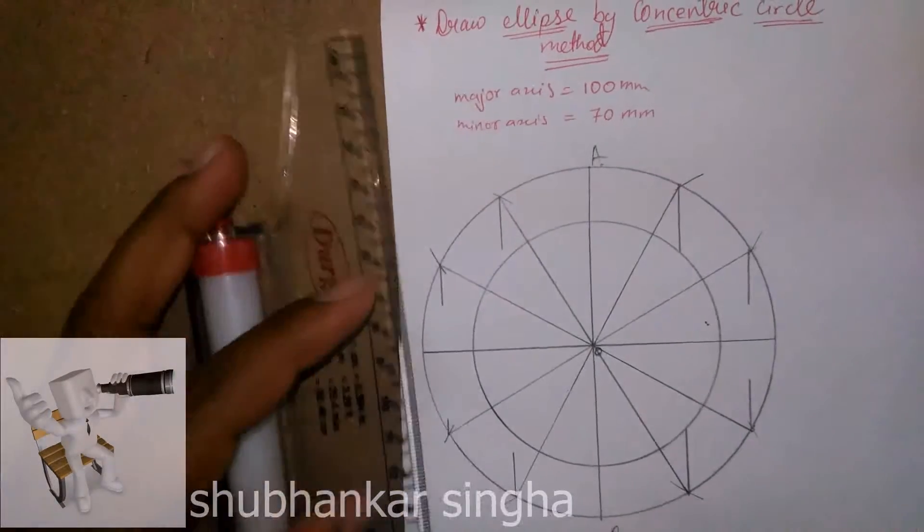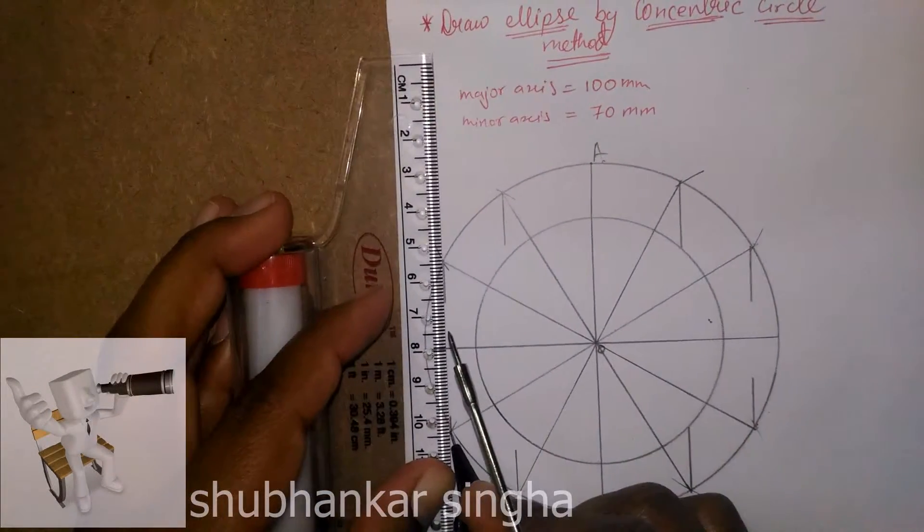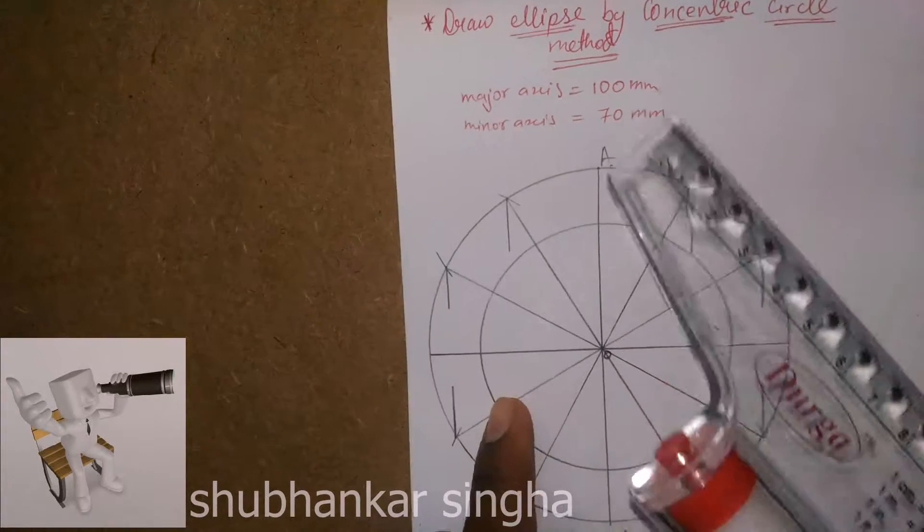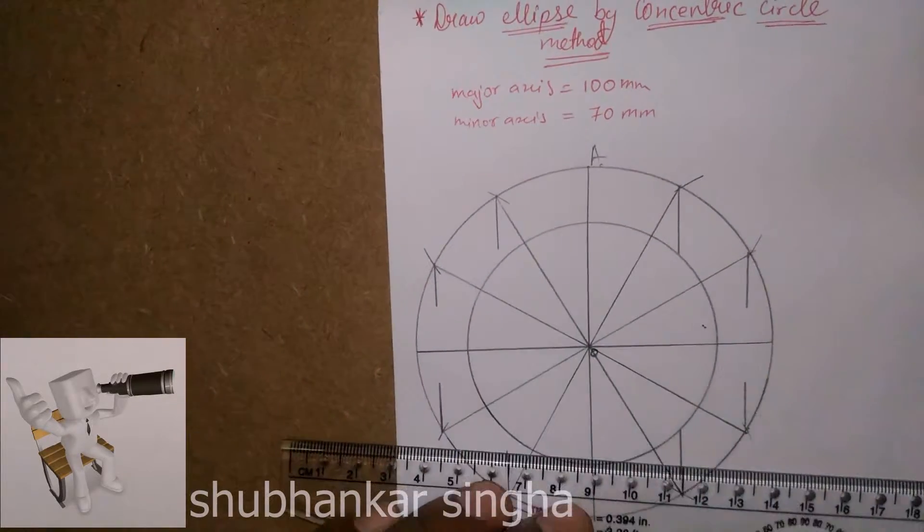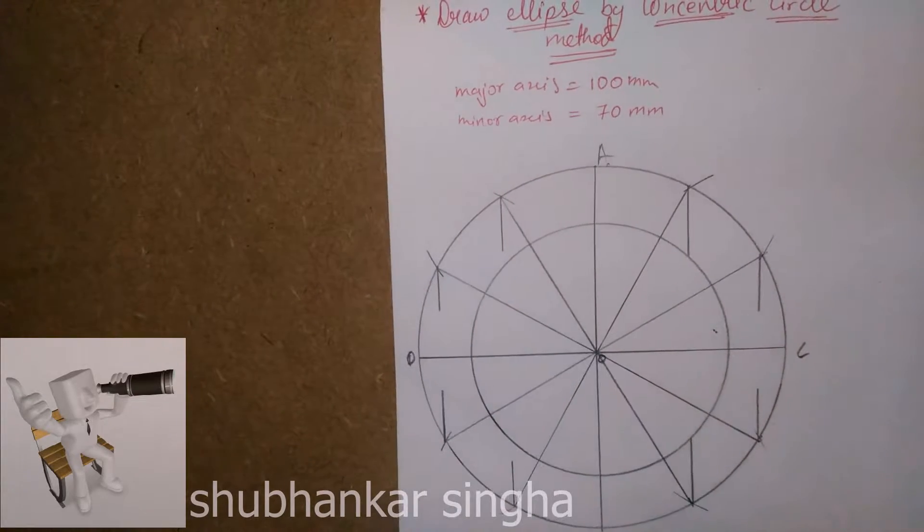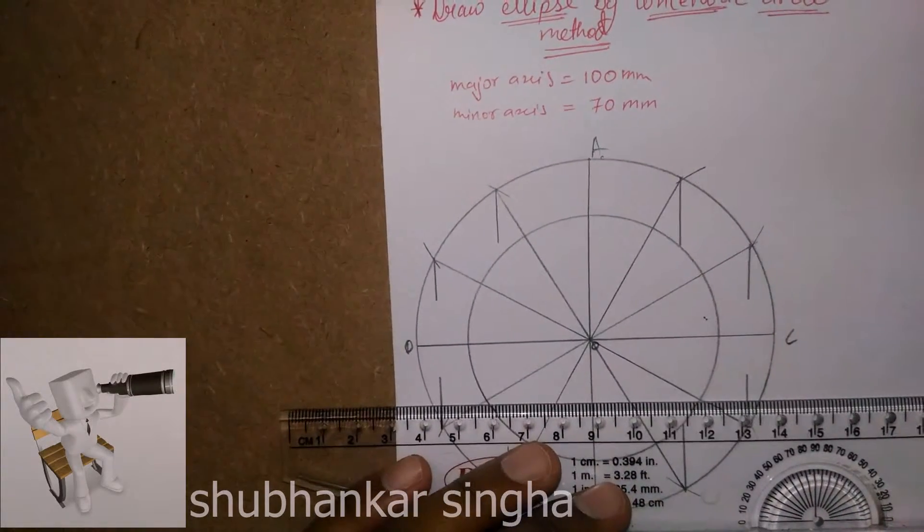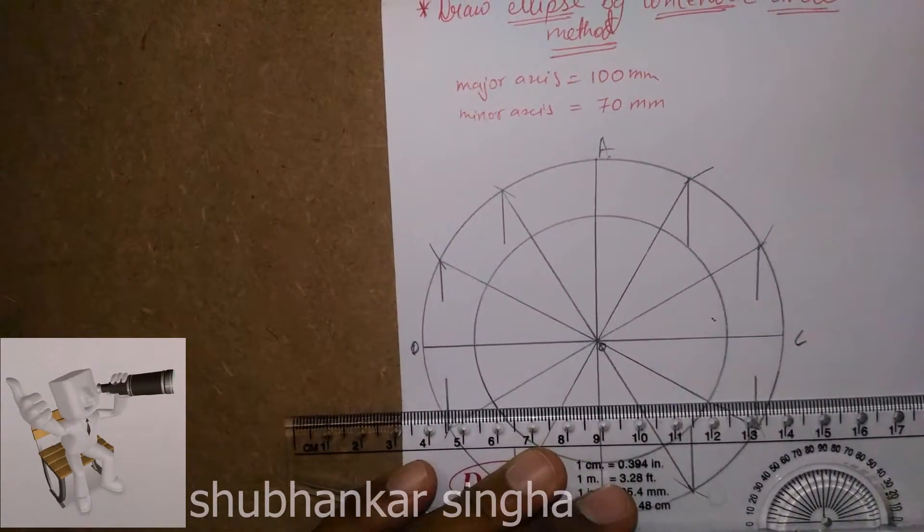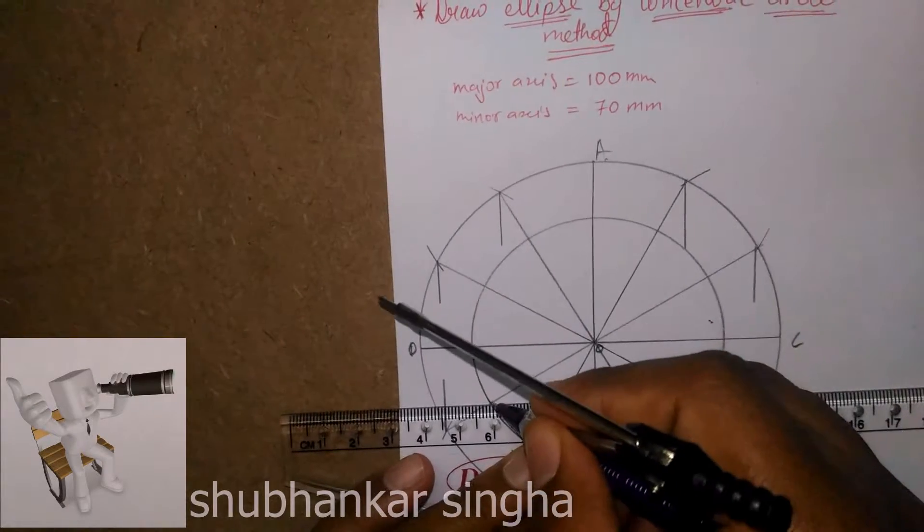We need to do the same process for the inner circle, but for the inner circle we have to draw the lines outward. That will be from C to, parallel to C to D, like this, from this point too.